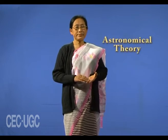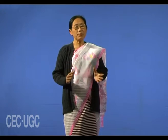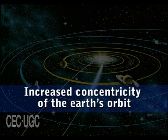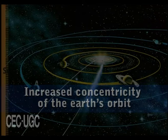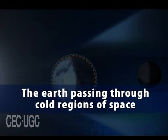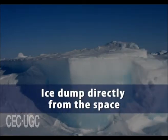Now let's move to the astronomical theory. There are several types of astronomical theories about the causes of the ice age, which fall generally into the following categories: number 1, increased concentricity of Earth's orbit; number 2, change in the intensity of solar radiation; number 3, the Earth passing through cold regions of space; and number 4, ice dumped directly from space.